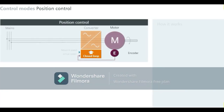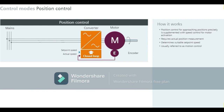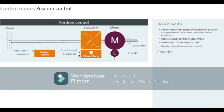Position control is required in addition to speed control if positions must be approached precisely. It is superimposed on speed control and requires an actual position measurement. The position controller determines the right set point speed based on the set point and actual positions. Such applications are usually referred to as motion control. The pulses from the same encoder which provides the actual speed are also used to detect the position via pulse counting, though requirements regarding quality and signal resolution differ.